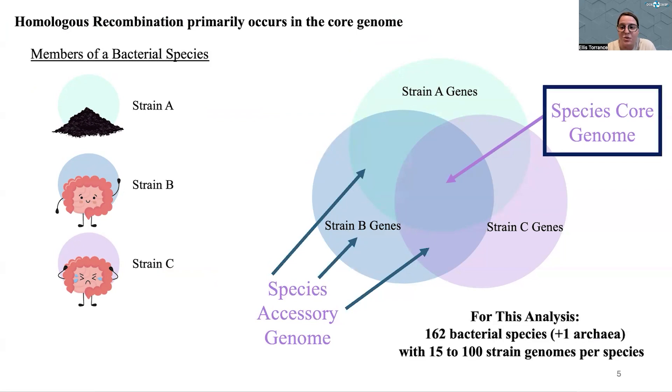When looking at homologous recombination specifically, we're looking within the core genome, just within that set of genes shared by all individuals. For this analysis, we're looking at 162 bacterial species, and within each of those species we have between 15 to 100 genomes within the analysis.